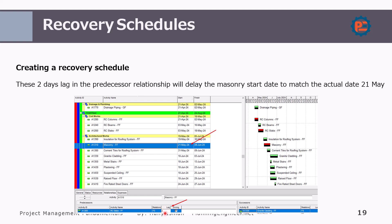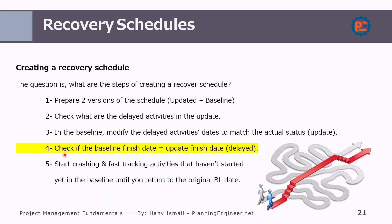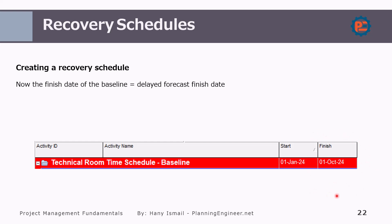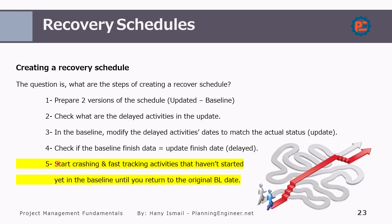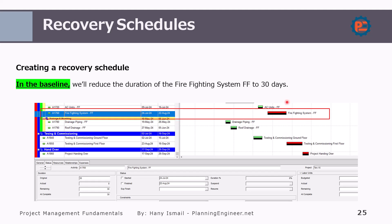We can also change the duration of the activity to make the finish date match the updated finish date. Now we check if the baseline finish date equals the updated finish date. Here we have the finish date as 1st October. So the finish date of the baseline now equals the delayed finish date. What we need to do next is start crashing or fast tracking — or maybe both — for activities that haven't started yet. For activities already started, I can't control them. So in our example, we go to the not-yet-started activities and start reducing the duration or applying crashing or fast tracking to ensure the forecast finish date matches the baseline date.